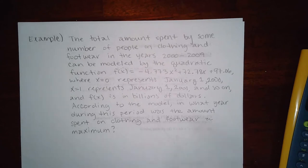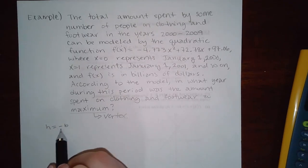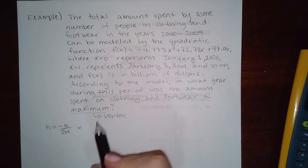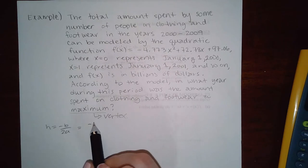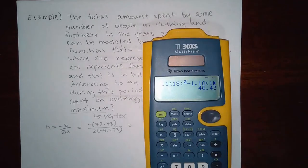So again, there's that word that should automatically remind you of vertex. Know how to find vertex. So h is going to equal negative b over 2a. b in this case is going to be 72.78. a in this case is negative 4.773. So if I type that in my calculator.